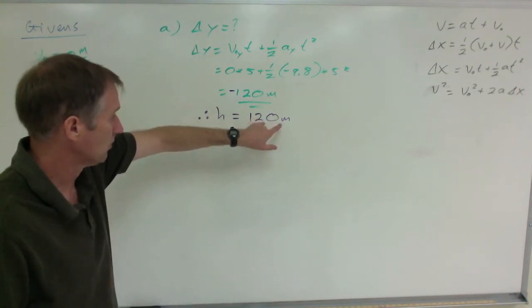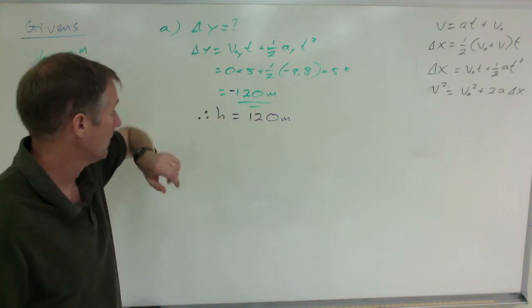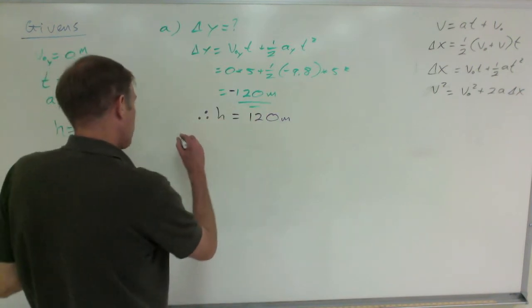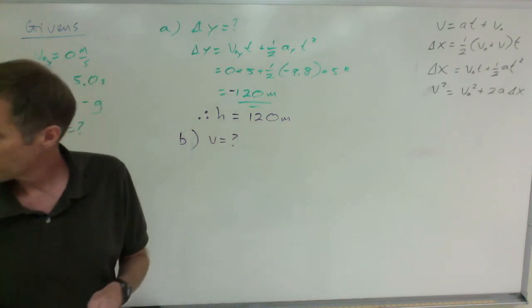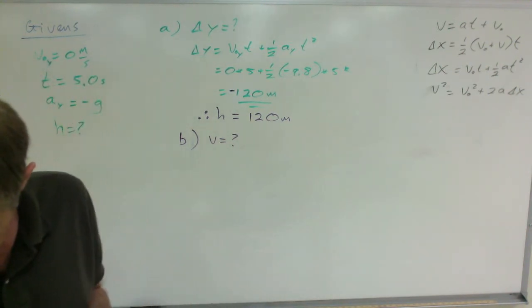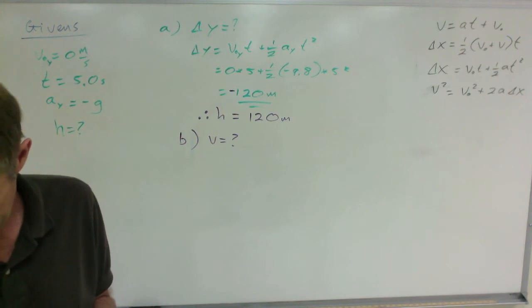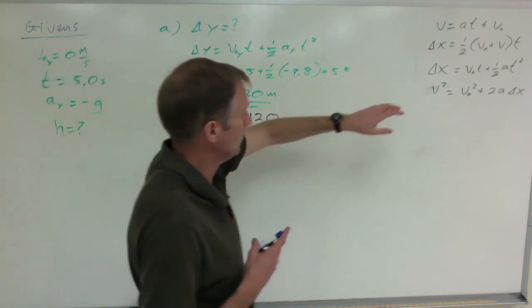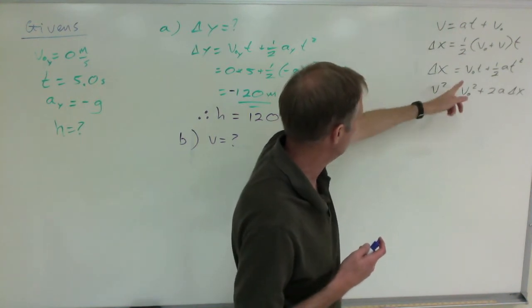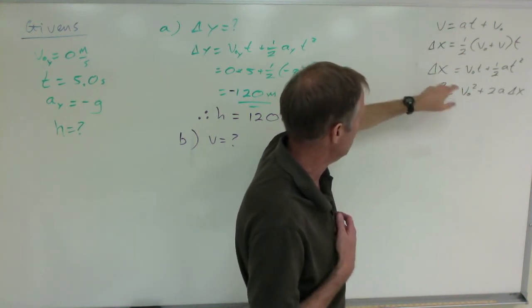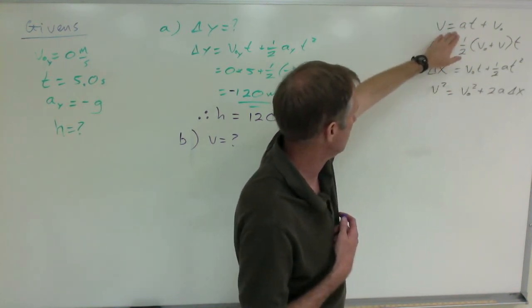Now for part b, to find the velocity. There's a number of equations we can use now. We could use this one, this one, or that. You wouldn't use that because it doesn't have v in it. It makes sense to just use this equation right here, that seems pretty simple. You could have done these out of order, that would have been fine.